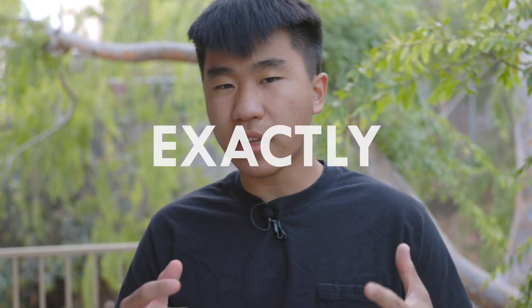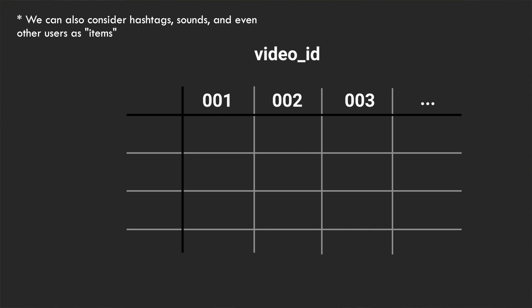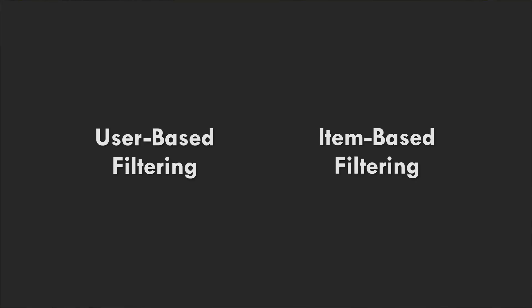What exactly is collaborative filtering? The goal of collaborative filtering is to predict what a user would enjoy given a dataset of items — or in our case, videos — as well as how much each user is attracted to each item. Now there are two main types of collaborative filtering: user-based and item-based, which I'll explain really quickly with the help of my good friends Yanny and Karen.